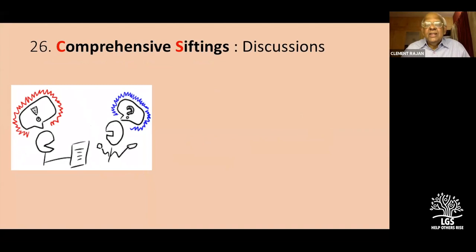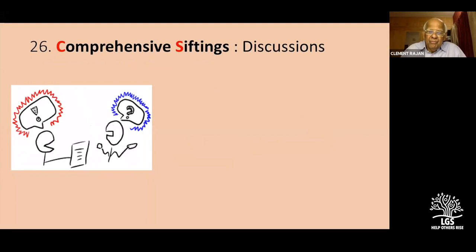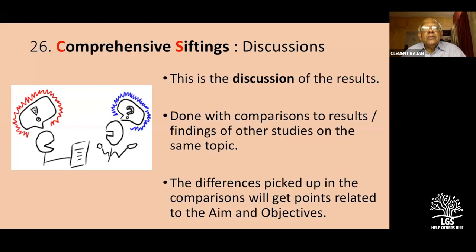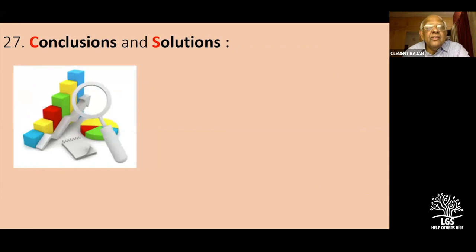Now comes what I call comprehensive siftings — the discussion. You have to compare your work with previous studies: an Indian study, an urban population study, a university study, and if necessary, studies from abroad. When looking at foreign studies — say from Turkey or Korea — be a little careful in interpreting because their socioeconomic presentations are different from ours and we cannot directly offer comparisons. The discussion will help you find the differences and formulate your points of view about your aim and objectives.